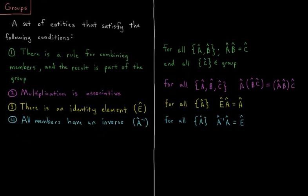A group is defined as a set of entities that satisfy the following conditions. Number one, there is a rule for combining the members of the group, and the result is also a part of the group.